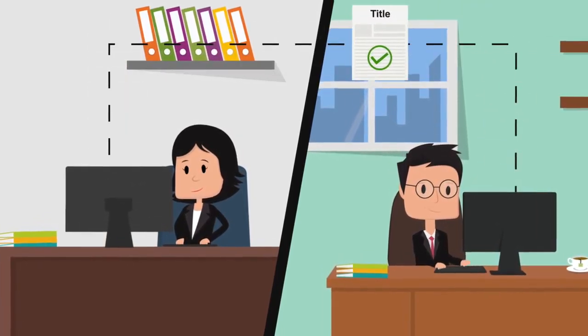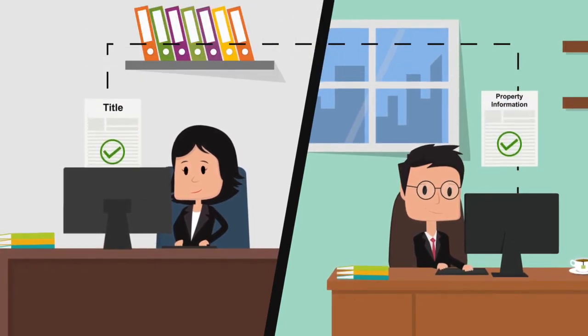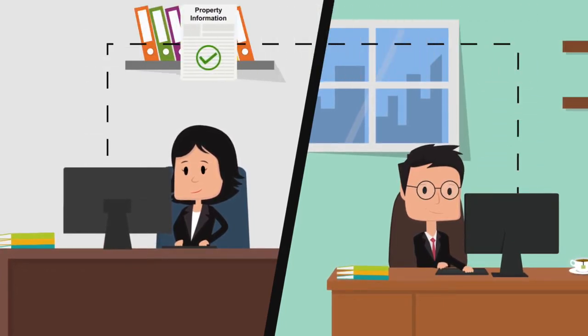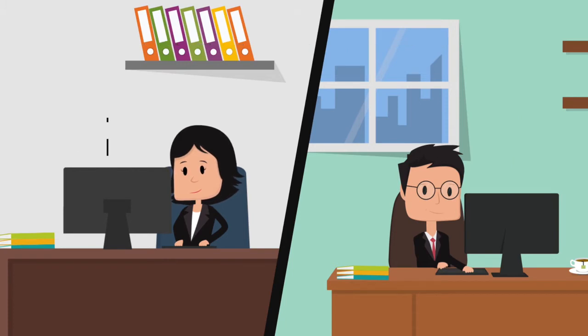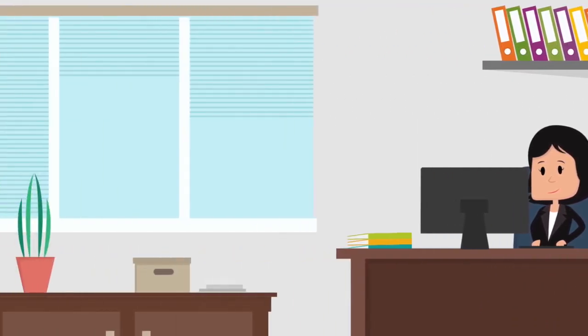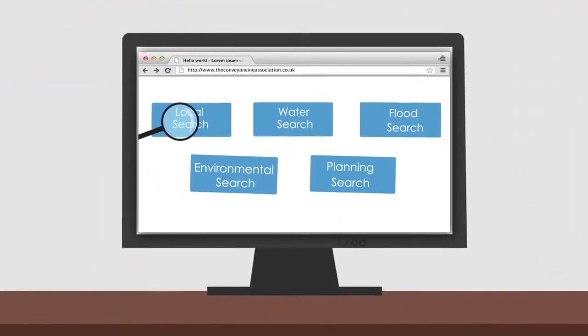In the contract pack will be the contracts, title, an official plan of the property and information provided by the seller about the property or what's included in the sale. The buyer's conveyancer will order searches.